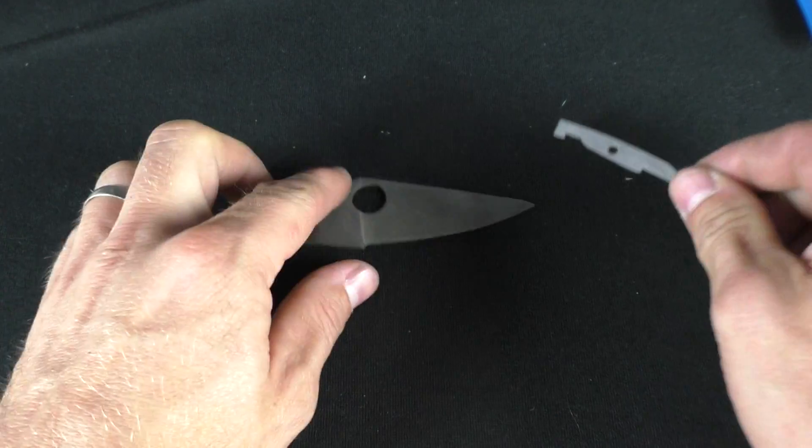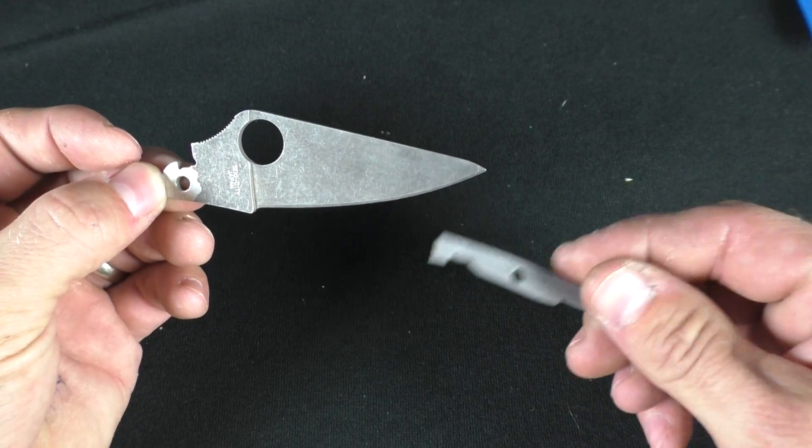That's your lock bar and your blade. Those are going to be acid etched.